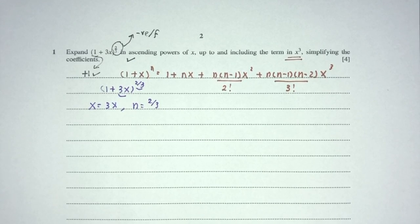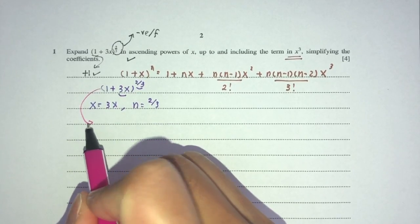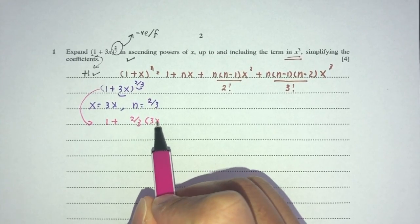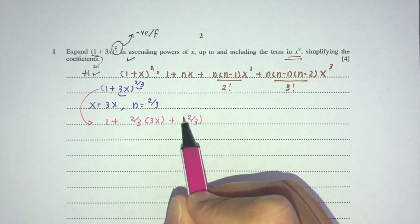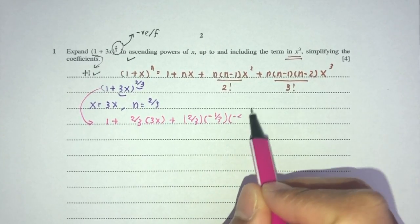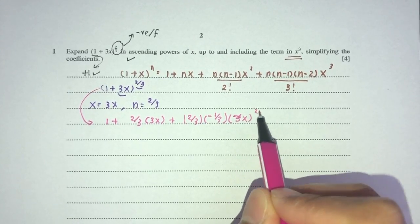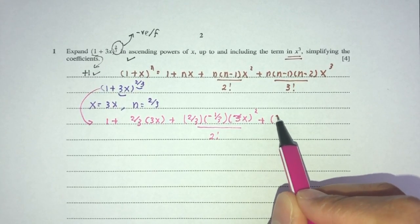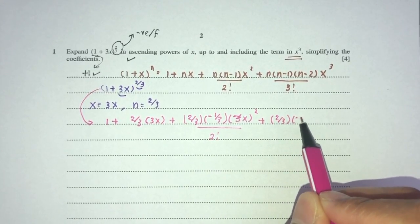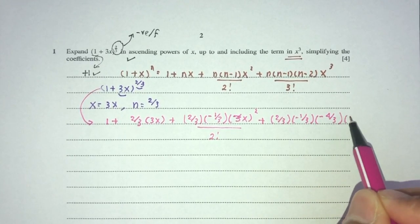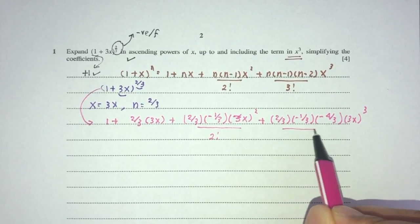Take your time because you don't want to make mistakes. So this whole thing becomes: 1 + (2/3)(3x) + (2/3)(−1/3)(3x)²/2! + (2/3)(−1/3)(−4/3)(3x)³/3!.